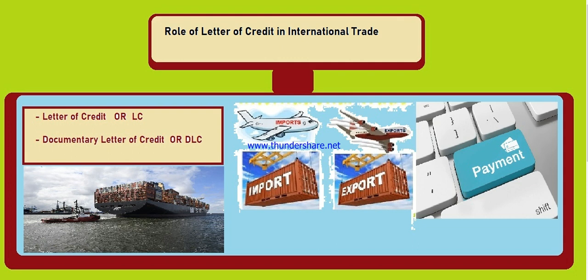The exporter collects the letter of credit and makes a shipment. After making the shipment, the exporter prepares all necessary documents in accordance with the letter of credit. These documents must serve as evidence that the shipment has taken place. The LC describes what necessary documents are required, and when the exporter makes documents in accordance with the LC, those documents must evidence that the shipment has taken place.